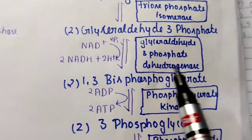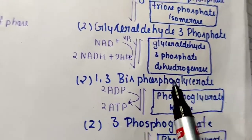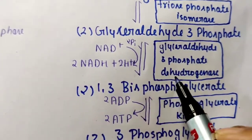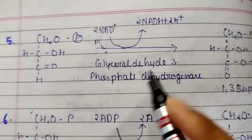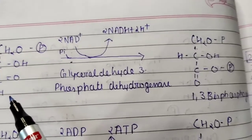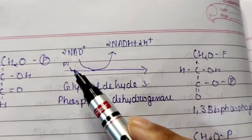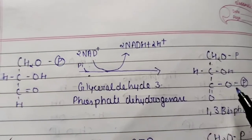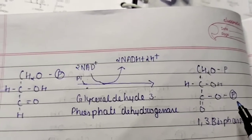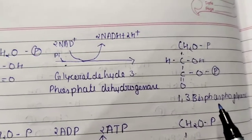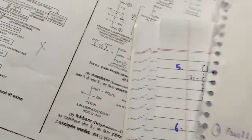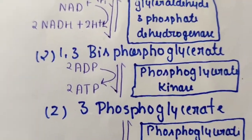Glyceraldehyde-3-phosphate is then acted upon by glyceraldehyde-3-phosphate dehydrogenase enzyme, which converts it to 1,3-bisphosphoglycerate. The dehydrogenase enzyme removes a hydrogen from this compound. A phosphate group is added, and a double bond is formed at the first carbon position, producing 1,3-bisphosphoglycerate with phosphate groups at positions 1 and 3.